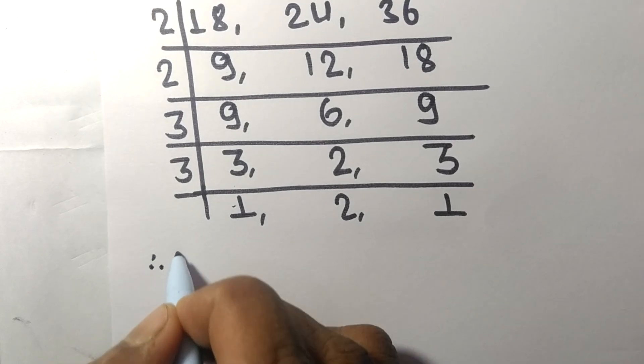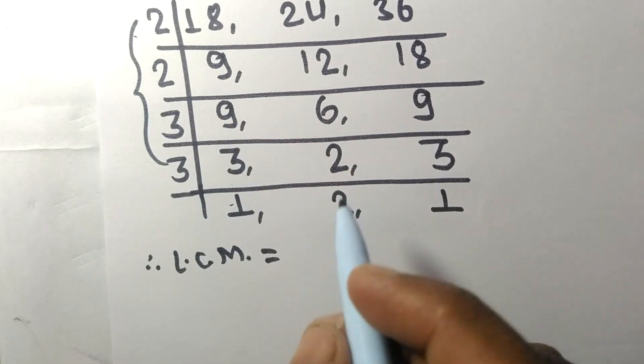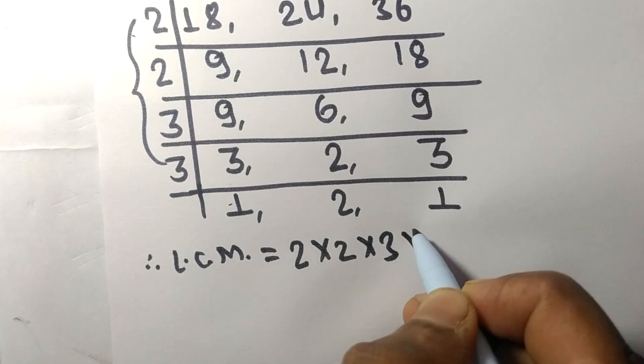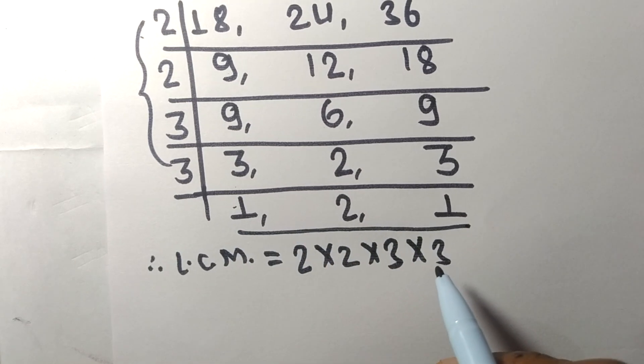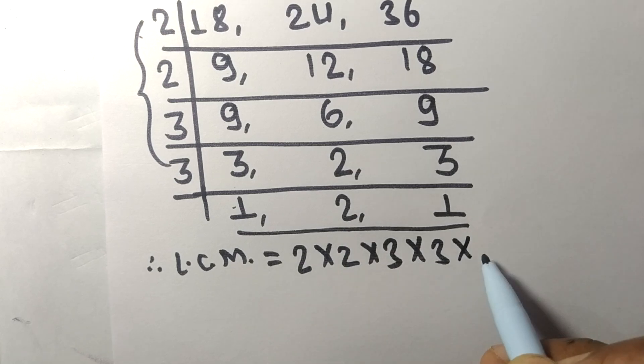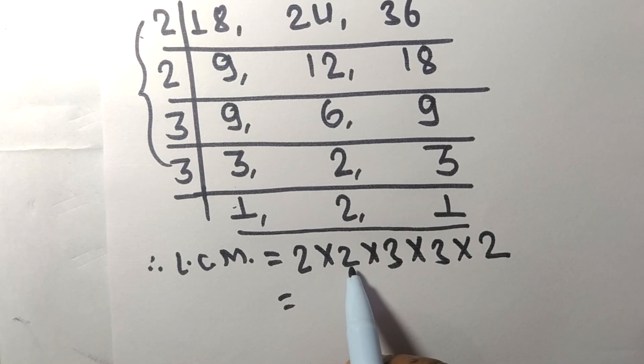The LCM is equal to, from this side, 2 times 2 times 3 times 3, and from this side we choose numbers greater than 1, that is 2, so multiplied by 2. So 2 times 2 means 4, 4 times 3 means 12, 12 times 3 means 36, 36 times 2 means 72.